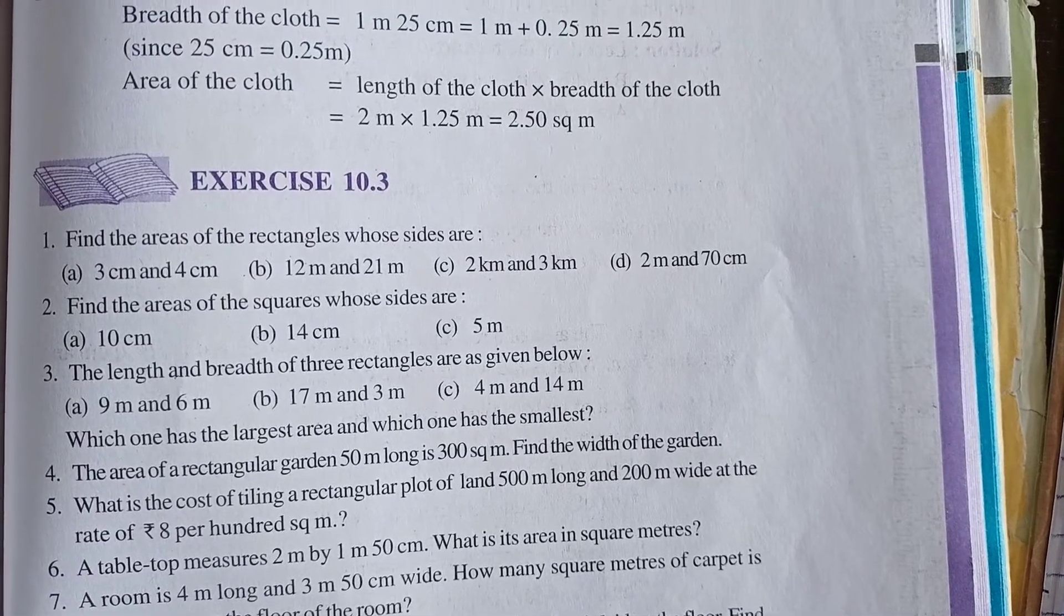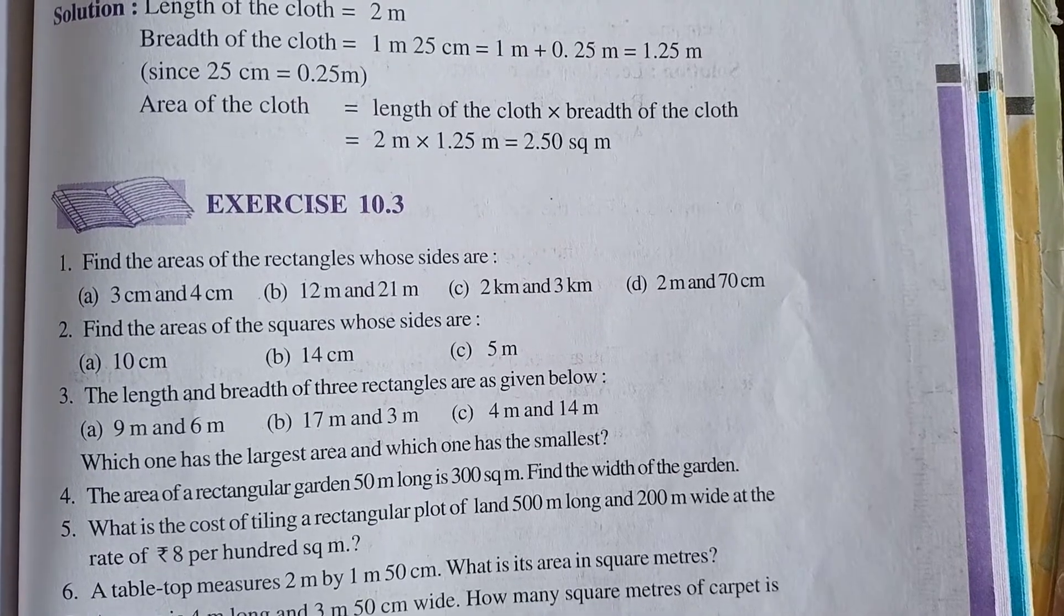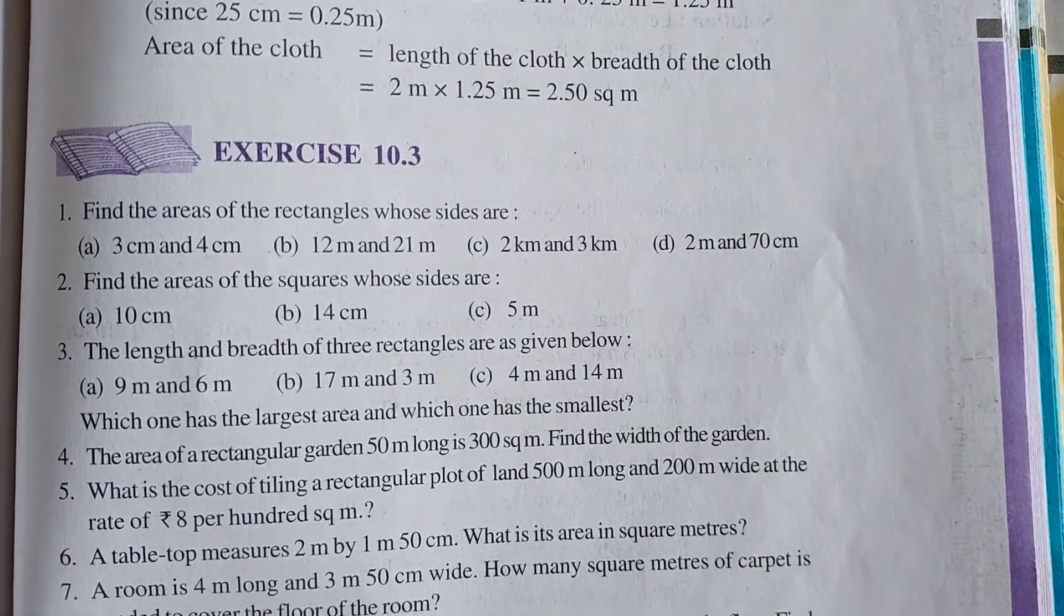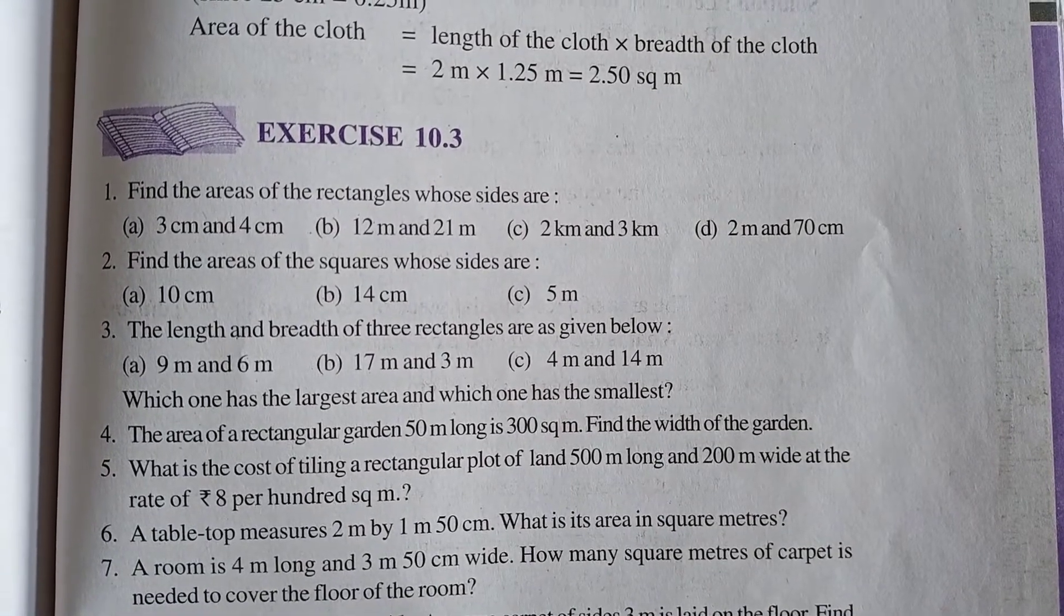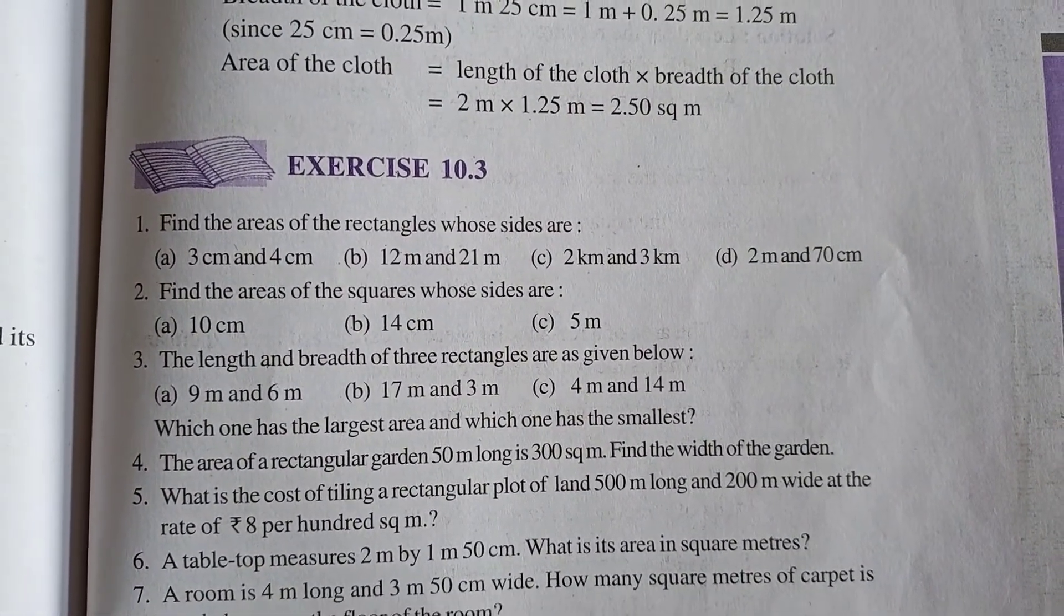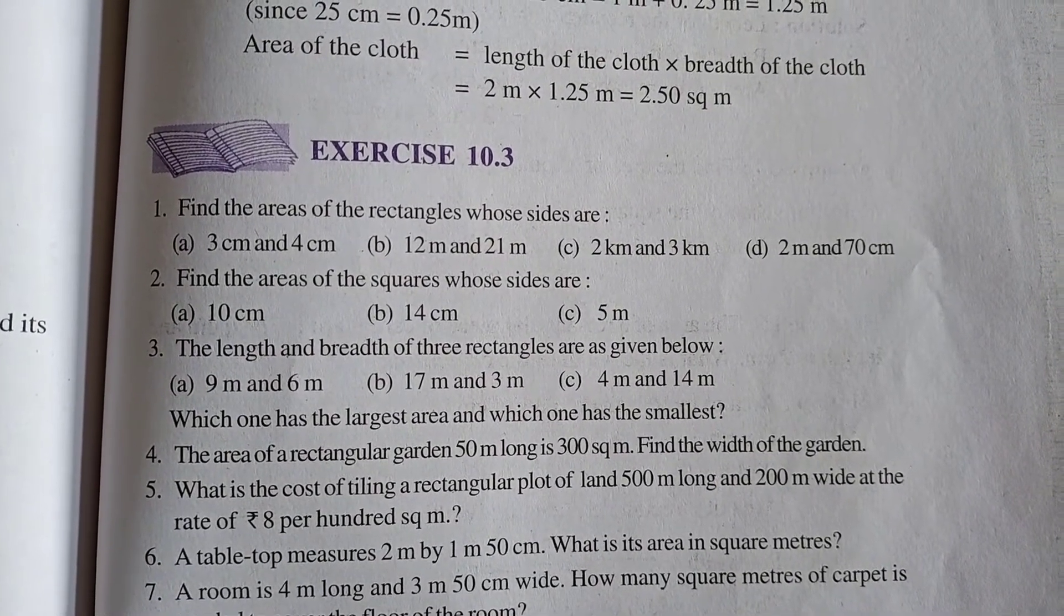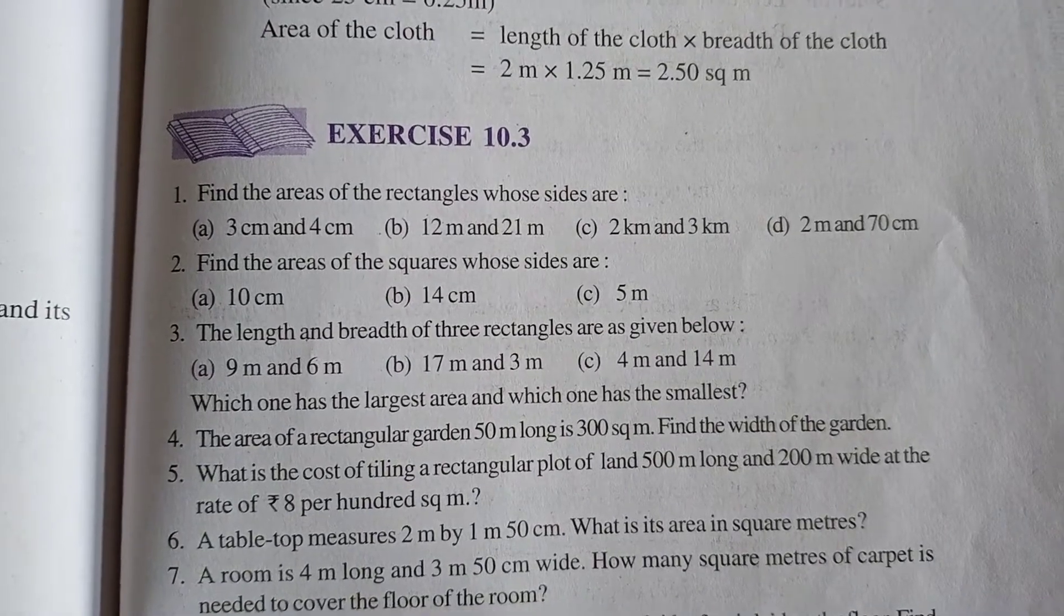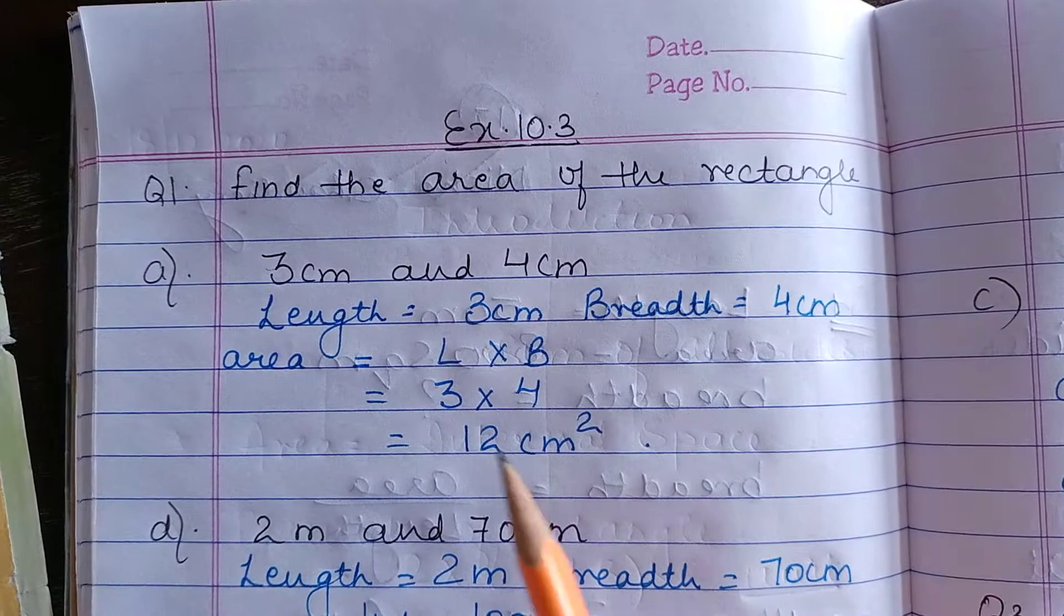Exercise 10.3 Question Number 1: Find the area of the rectangles whose sides are given to us. In this exercise we have to find the areas of the figures mentioned. In the first question they have given four parts, so in each part we have to find the area of a rectangle. As in the introduction, we have studied about the formulas.